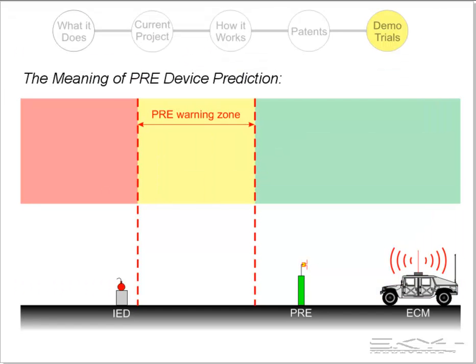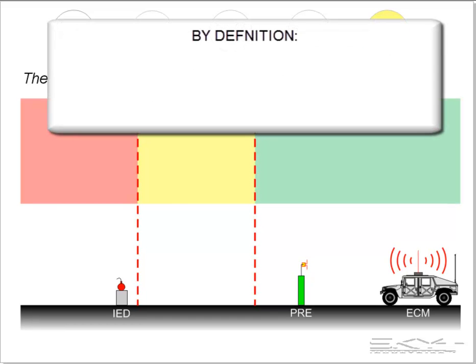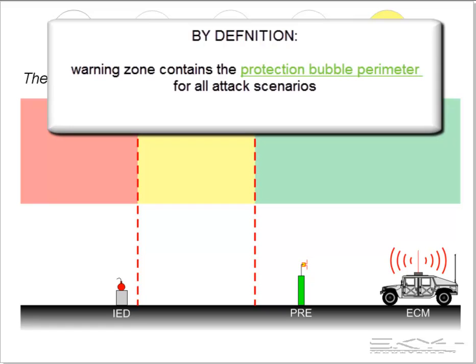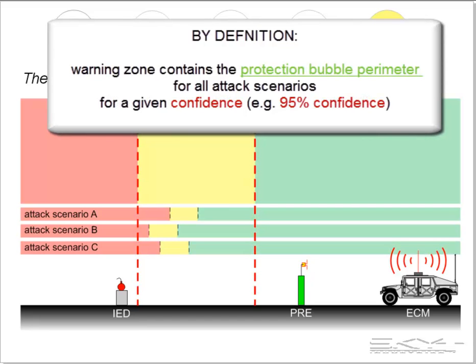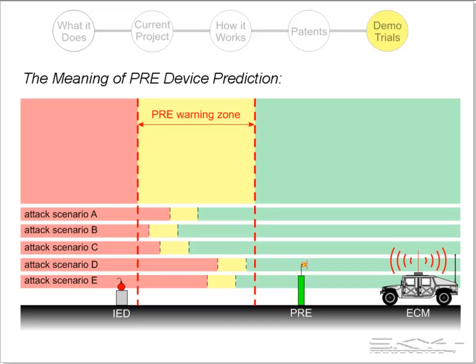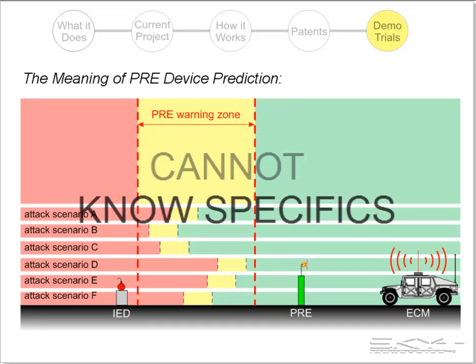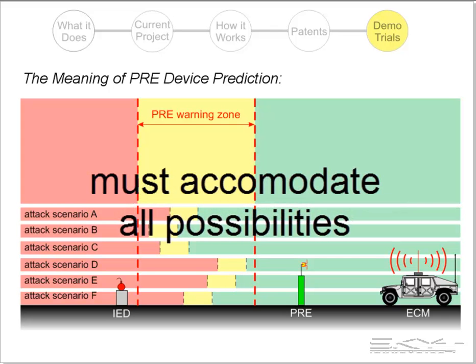Now we can talk about the meaning of the PRE indicated warning zone. By definition, the indicated warning zone contains the ground truth ECM protection range for all possible attack scenarios with a predefined probability — for example, 95% probability, which in this case is the same thing as 95% confidence. The reason it's a probability is because we do not and cannot know the specifics of an attack scenario, and therefore we must accommodate, for example, 95% of all possible attack scenarios.